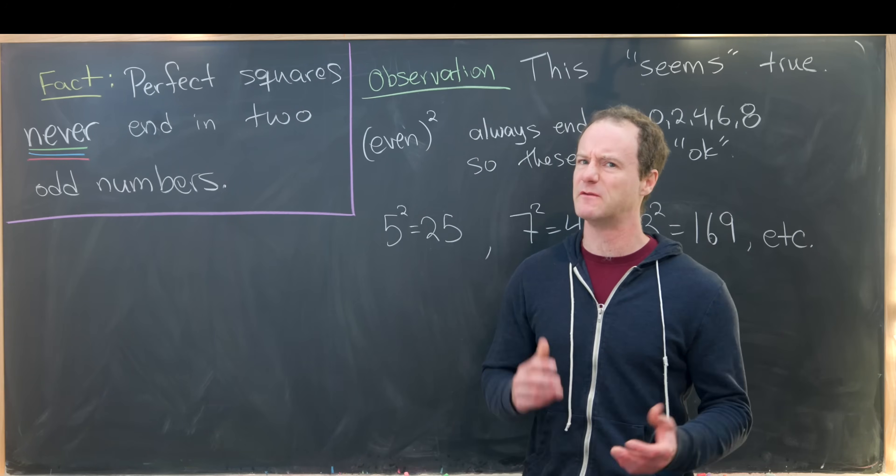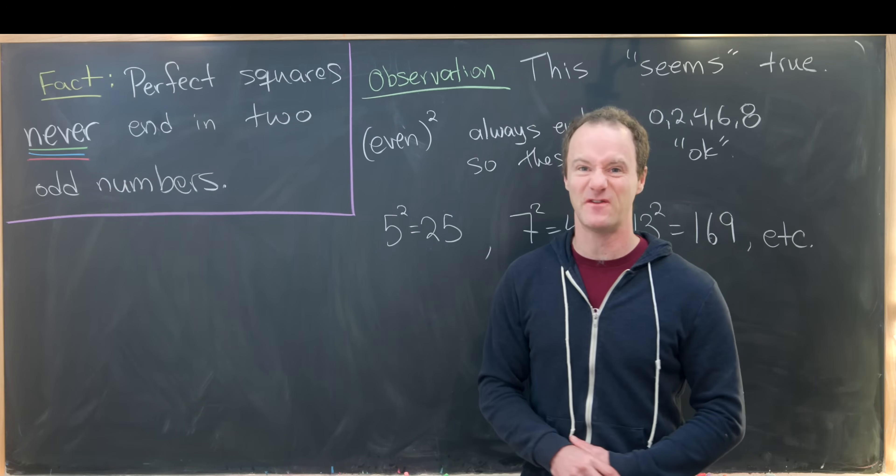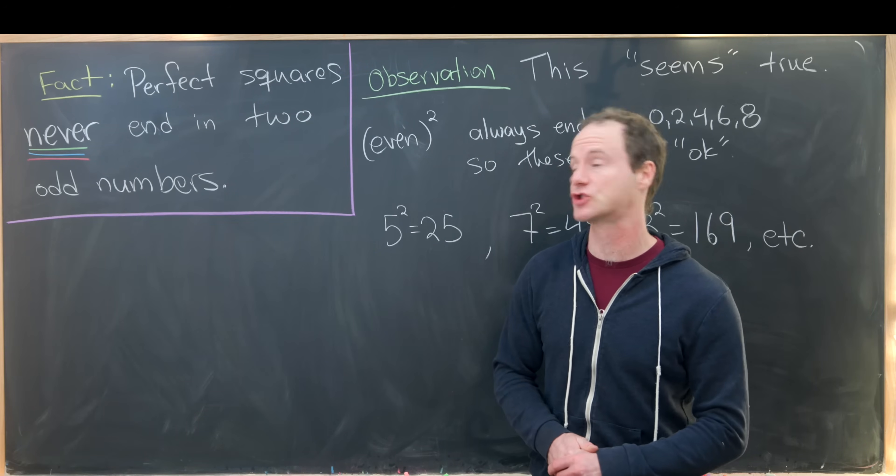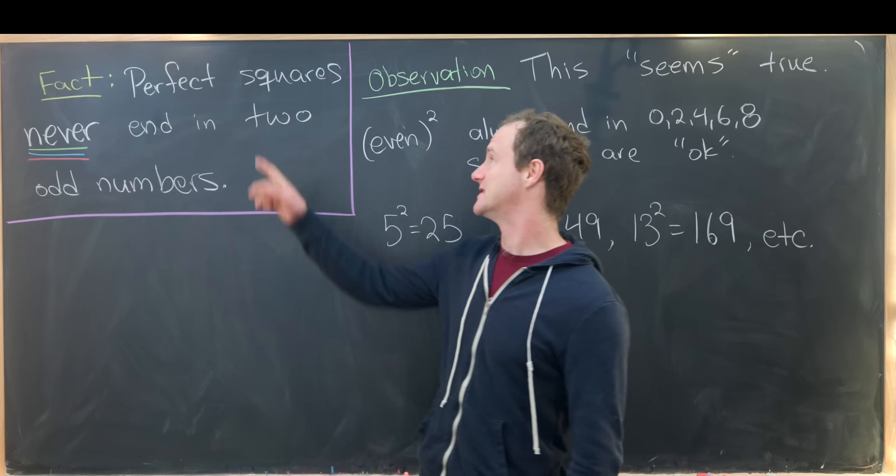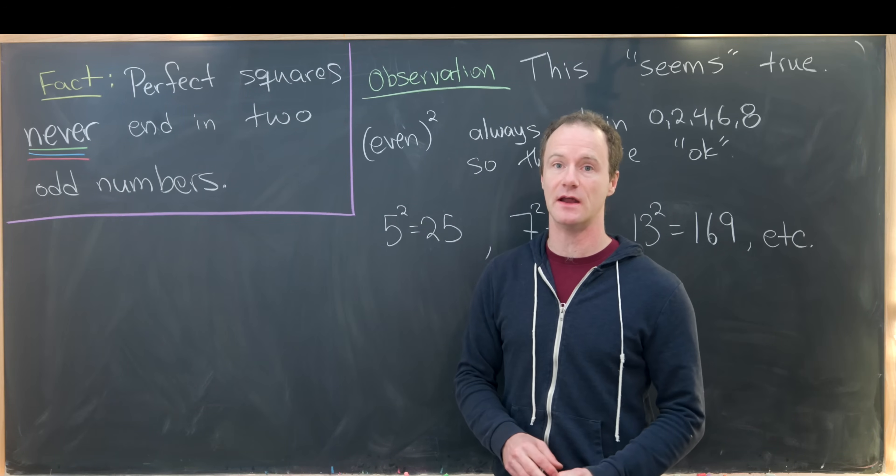Today I've got a fairly simple but very nice little number puzzle, and I'm going to present it as a fact, but we'll prove that this fact is true. And that is that all perfect squares never end in two odd numbers.